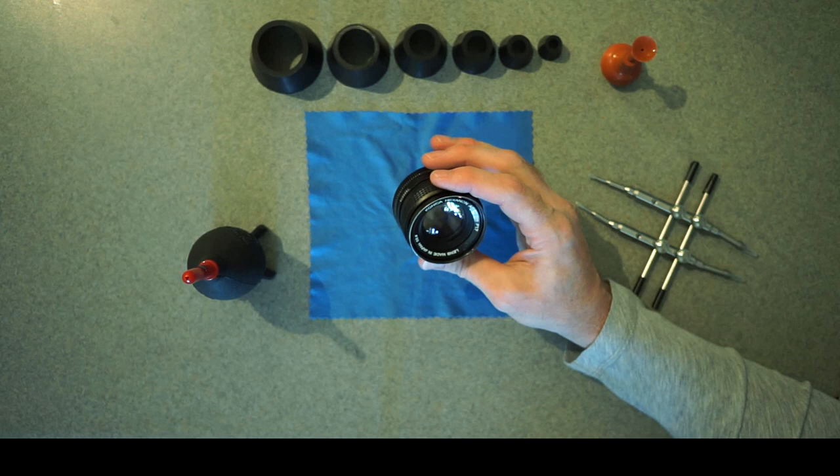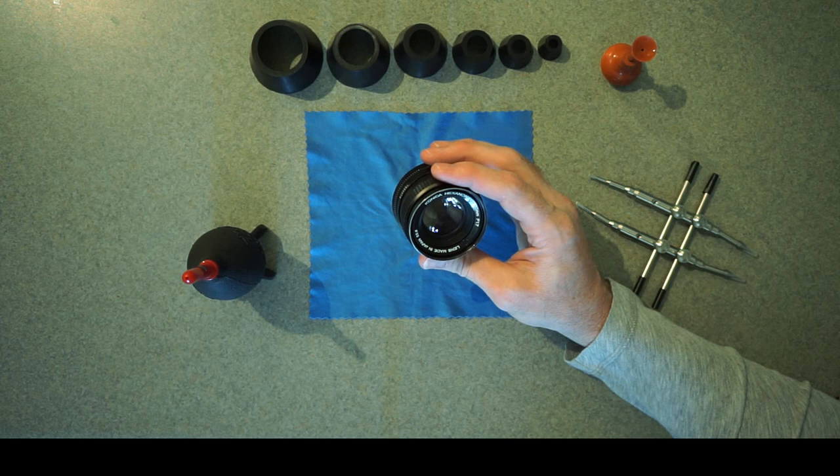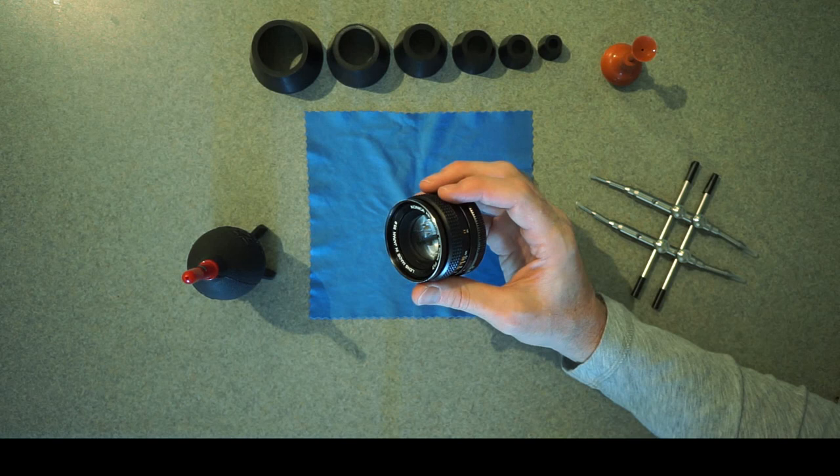Welcome. I'm going to take this Konica 50mm lens apart. It's a Hexanon AR series F1.7, a nice little lens, obviously a very vintage lens, probably around 40 years old-ish.